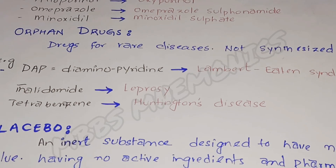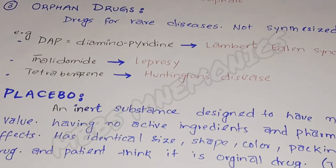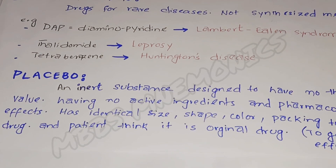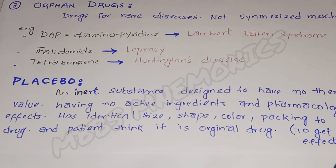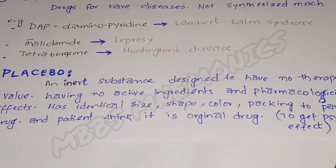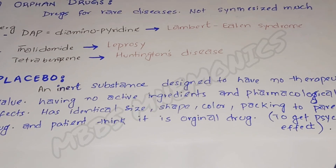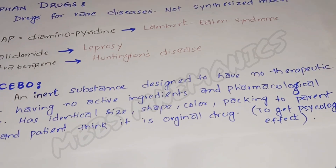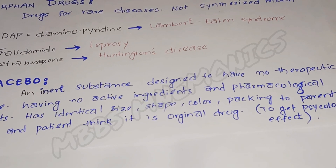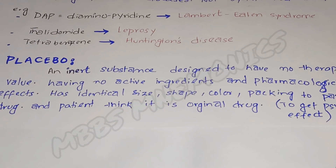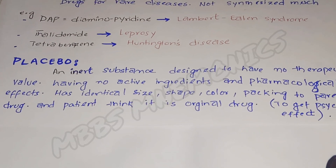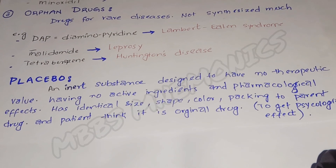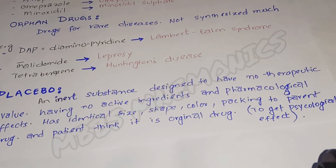The fourth type is placebo. Placebo is an inert substance designed to have no pharmacological or therapeutic value. It has no active ingredients and no pharmacological effect. The placebo has the same identical size, shape, color, and packing as the drug it is prepared for, and is given to the patient. The patient thinks it is the original drug, but it is actually just to produce a psychological effect.